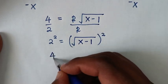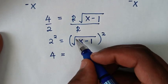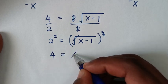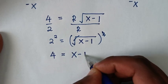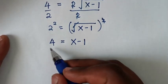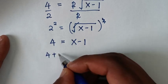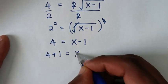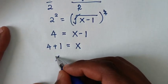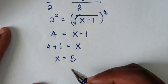Squaring both sides, 2 squared is 4, and the square root cancels the square on the right to give x minus 1. Taking negative 1 to the other side gives 4 plus 1 equals x. So x equals 4 plus 1, which is 5.